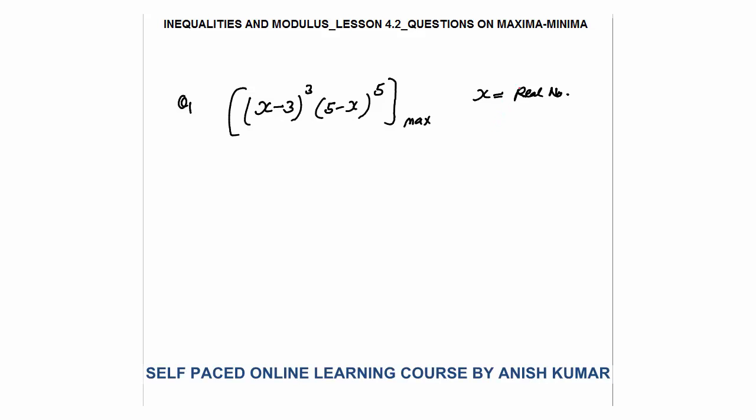First we will calculate the range at which this product will be maximum. If x is greater than 5, the term (5 minus x) will be negative, so (5 minus x) power 5 will be negative, while (x minus 3) cube will be positive. So the overall product will be negative, and that won't give us the maximum value.